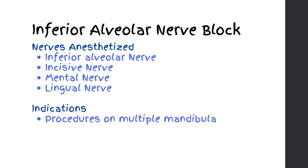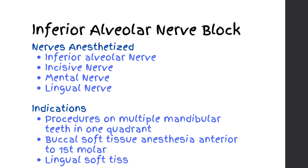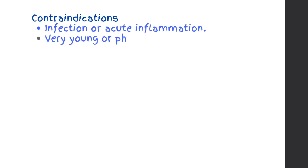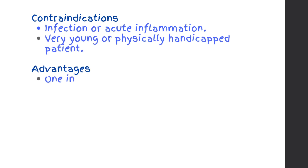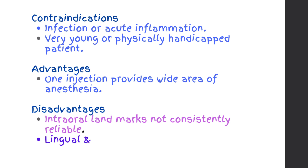Indications: procedures on multiple mandibular teeth in one quadrant; buccal soft tissue anesthesia anterior to the first molar; lingual soft tissue anesthesia. Contraindications: infection or acute inflammation; very young or physically handicapped patient. Advantages: one injection provides a wide area of anesthesia. Disadvantages: intraoral landmarks not consistently reliable.